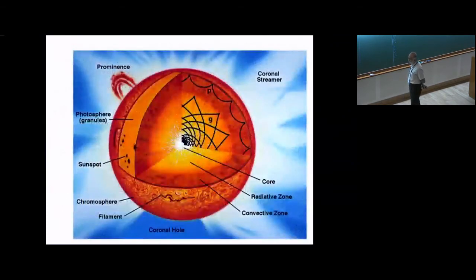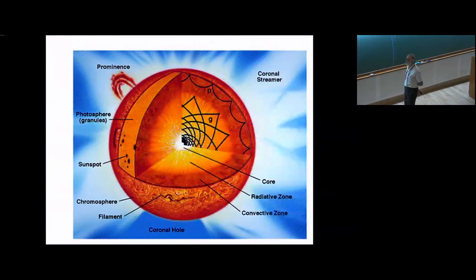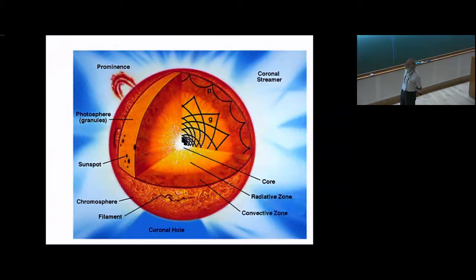This is a cartoon of the Sun. In the center, temperature is about 15 million degrees, and that is where energy is generated by nuclear fusion. This energy comes out through radiation up to about 70 percent of the solar radius. After that, the opacity becomes pretty high and radiation cannot transmit the required flux, so convection takes over. The outer 30 percent of the solar radius transmits energy by convection. This convection manifests on the surface in the form of granulation.